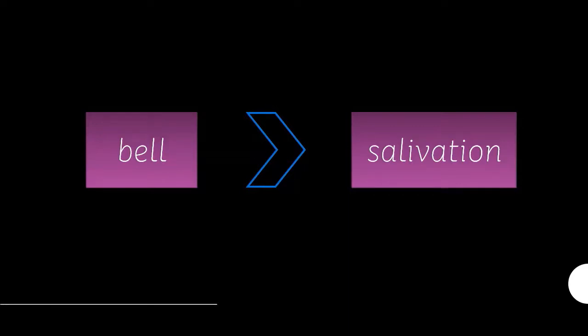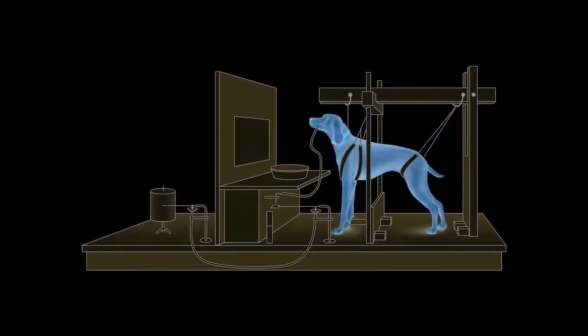Why? What has just happened here? Consider another condition. This is another illustration. The details are the same as the previous one, except this time a light is used instead of a bell.